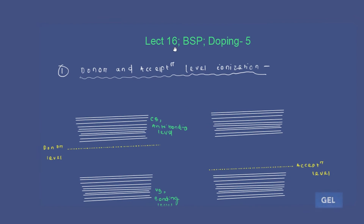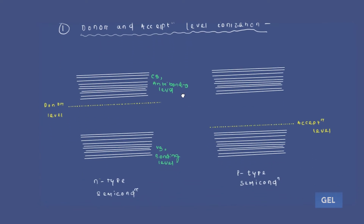Welcome to the 16th lecture of EDC. We are still in the first module, basic semiconductor physics, and this is the fifth lecture video for doping. In this video we are going to understand donor and acceptor level ionization. For n-type semiconductor, the donor level will be nearer to the conduction band. For p-type semiconductor, the acceptor level will be nearer to the valence band.